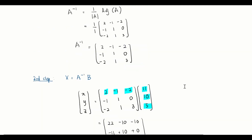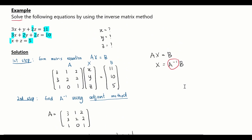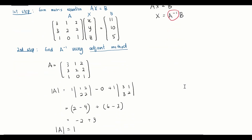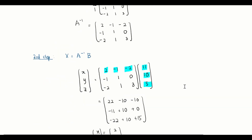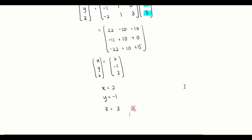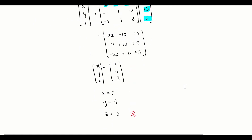To recap the three steps: first, form the matrix equation AX = B; second, find the inverse of A using the adjoint method; and third, multiply the inverse by matrix B to obtain the solution.